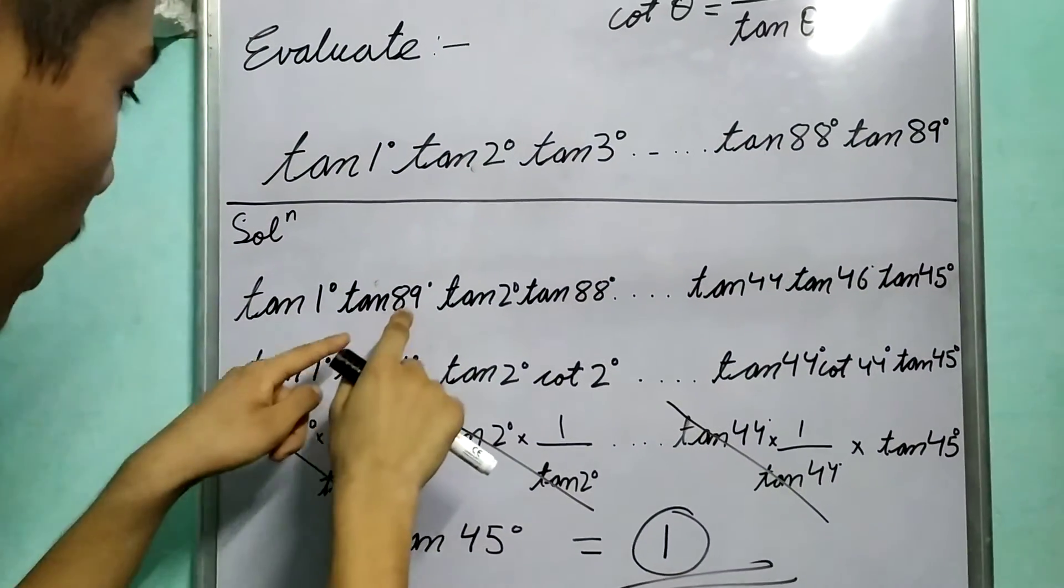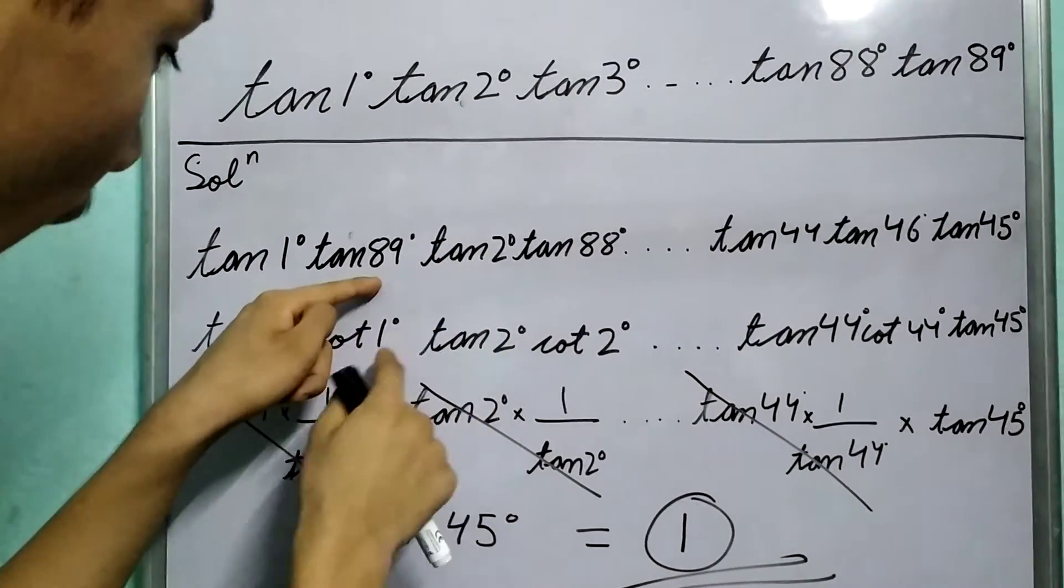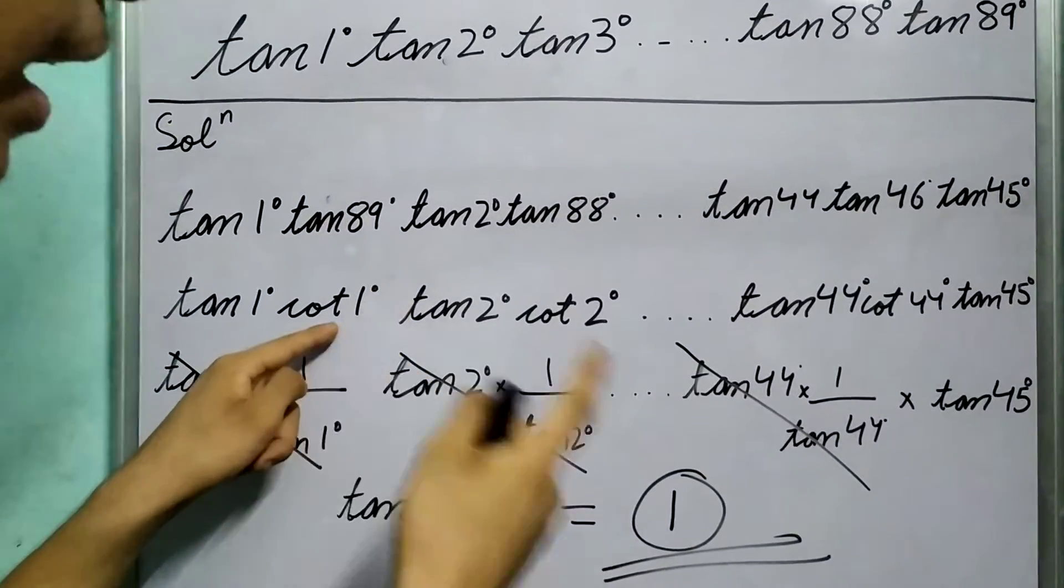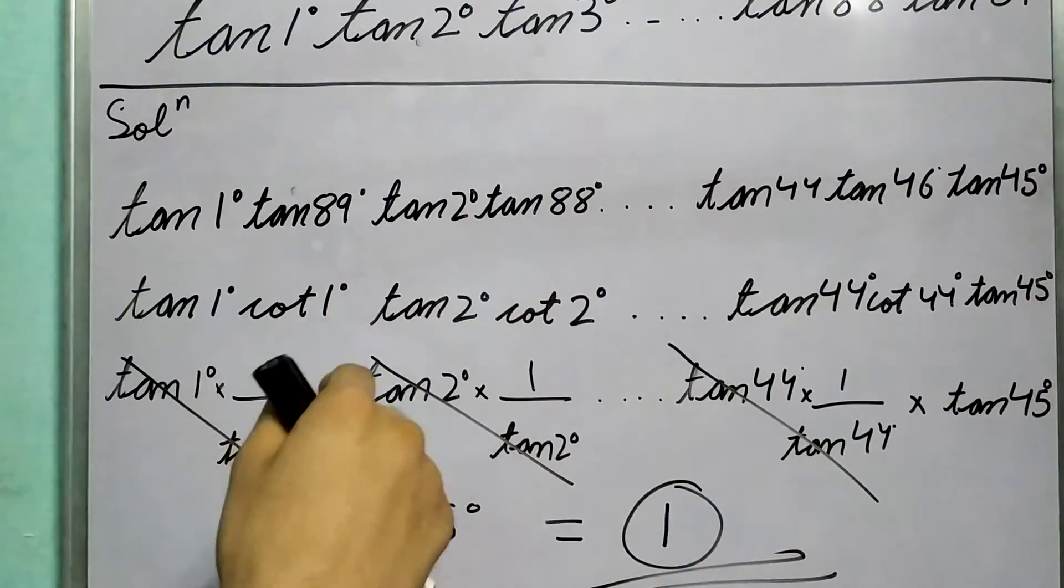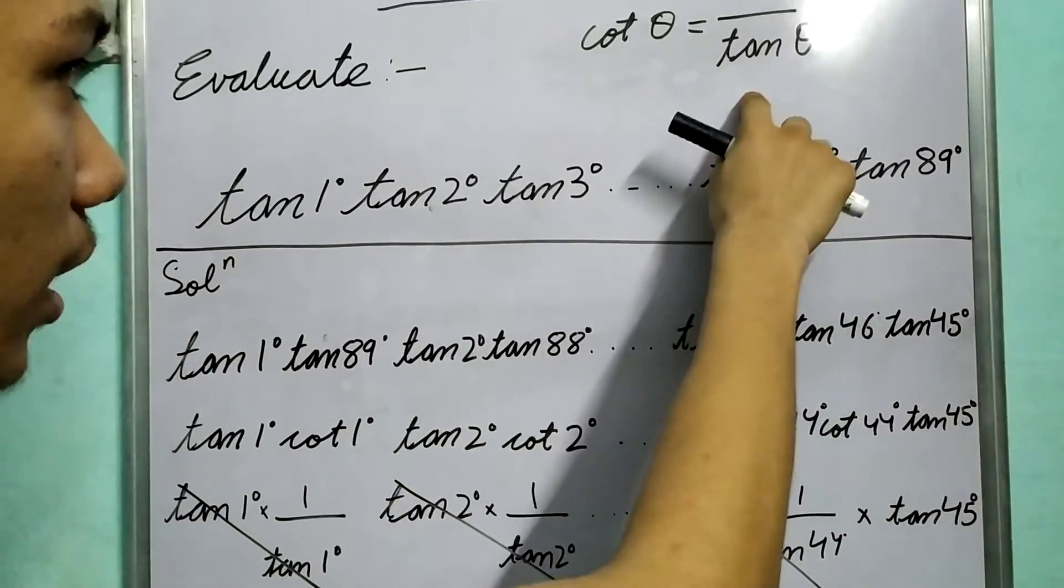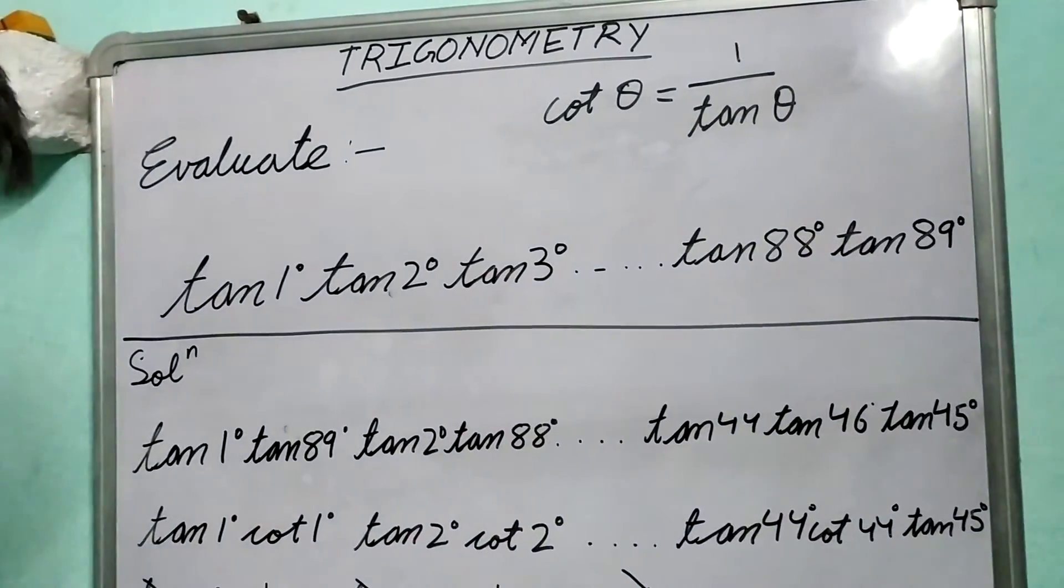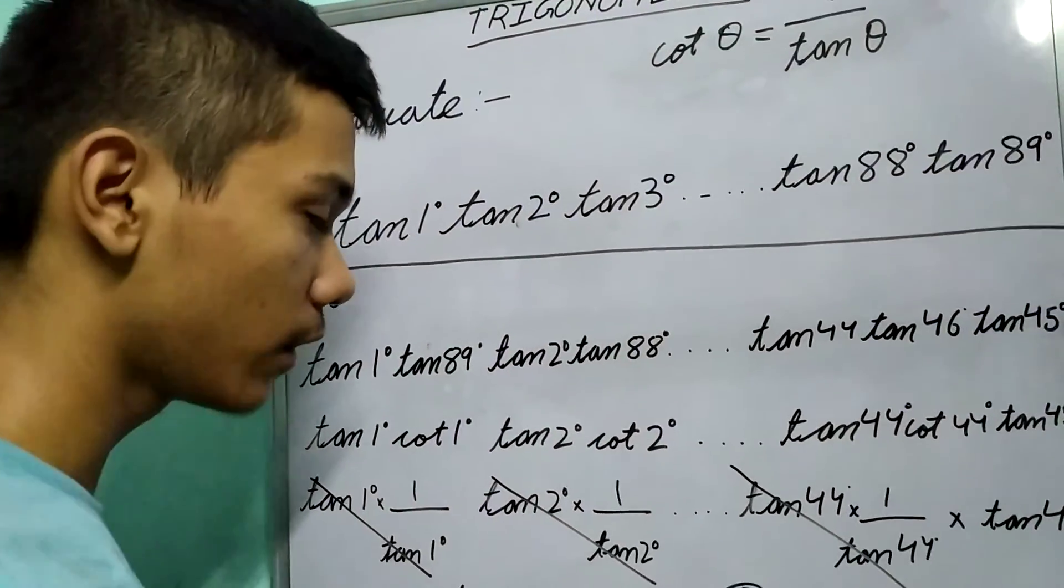What this question asks: the question asks for the relationship between tan and cot, the co-function relationship that we can express tan 89° as cot 1°, and the reciprocal relationship between them like cot θ is 1/tan θ. And using this, everything cancels out and we are left at one.